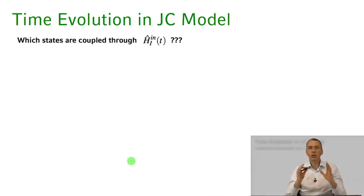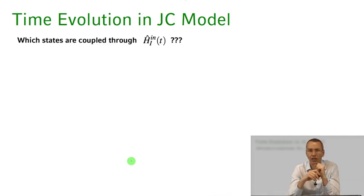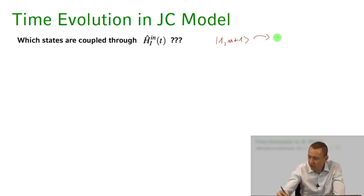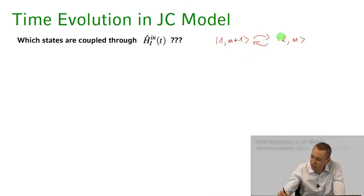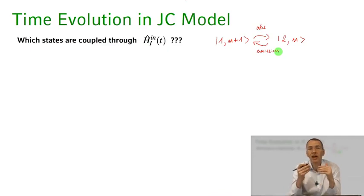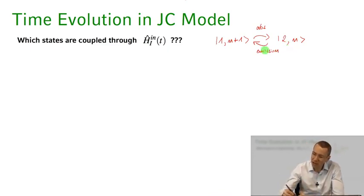First, let's ask which states are coupled by this light-atom interaction Hamiltonian. The state where the atom is in the ground state with n+1 photons is coupled to the state where the atom is in the excited state with n photons — this corresponds to an absorption process. The reverse, where the excited-state atom emits a photon, is the emission process. These two states are coupled, so we will find coupled differential equations between the expansion coefficients c₂ₙ and c₁,ₙ₊₁.